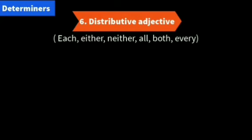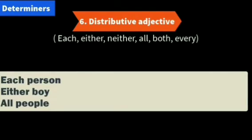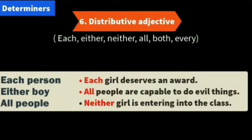The distributive adjectives are each, either, neither, all, both, every. Examples: 'Each girl deserves an award. All people are capable of doing evil things. Neither girl is entering into the class.'